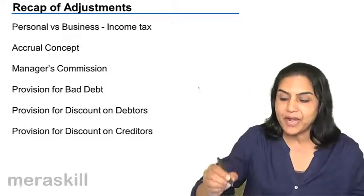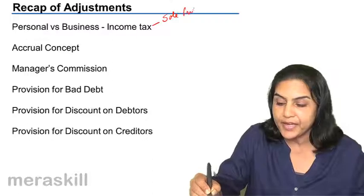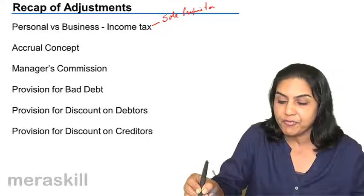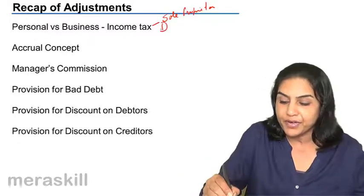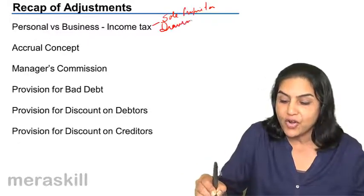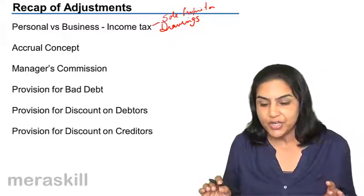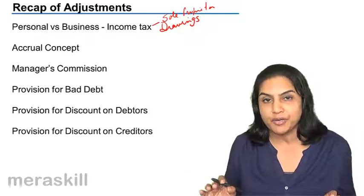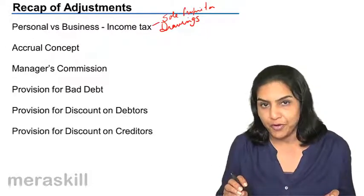If income tax has been paid by the business in case of a sole proprietor, such income tax would be treated as drawings and not as expense. This is because income tax authorities will not differentiate between the income of the sole proprietorship and the income of the firm.